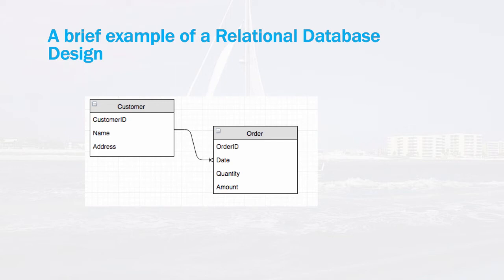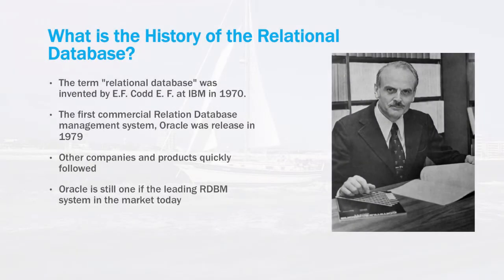A large database may contain hundreds of tables with many complex relationships. The term relational database was invented by EF Codd while working at IBM in 1970. Codd developed much of the underlying theory of how a relational database would function. He developed the relational model that describes how databases are to be composed of entities and relationships, and the basic theory of how to query data from these systems.